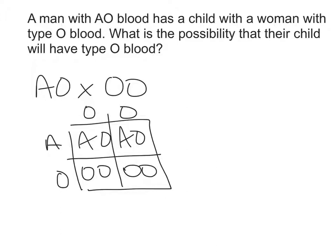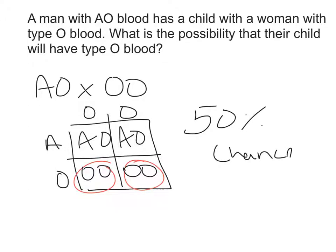We go back to the question and answer what is asked: what is the possibility that their child will have blood type O? We look at the genotypes in our Punnett square. We see that there are two boxes with OO, which means that there's a 50% chance of the child having type O blood.